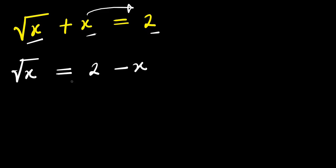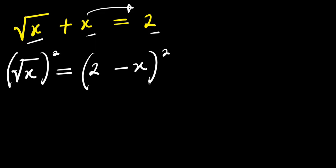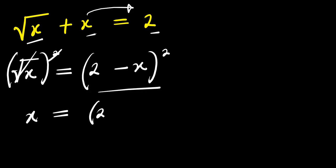So right now what we can do is to take squares over this equation — this cancels, so I have x here, and this equals 2 minus x times 2 minus x.